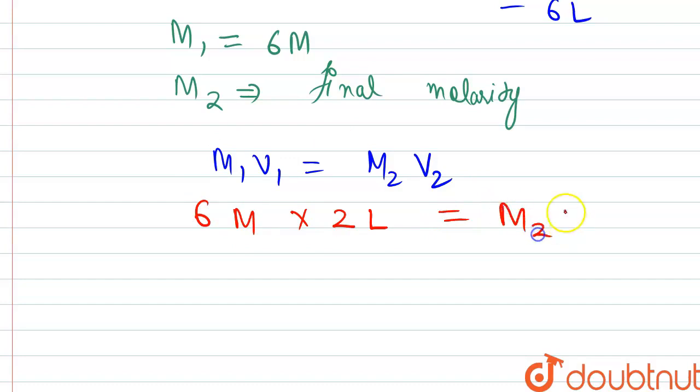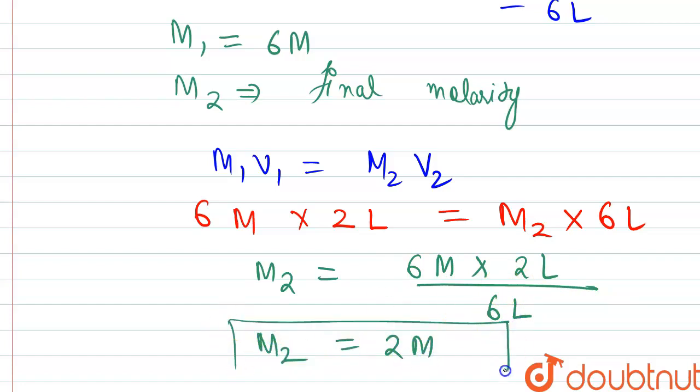Will be equal to M2 multiplied by final volume, that is six liters. From here we will get the value of M2 equal to six molar multiplied by two liters divided by six liters. This would be equal to two molar. So this is the resulting molarity of the solution, two molar. That is the answer.